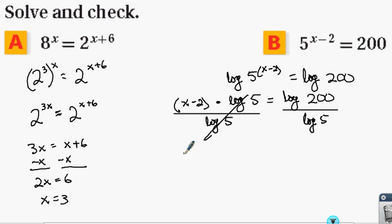So this is a form of 1, and now we're left with x minus 2 equals log 200 divided by log 5.